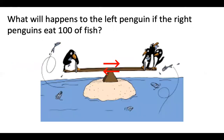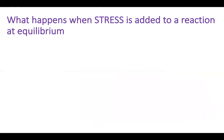So a quick question for you. What will happen to the left penguin over here if the right penguins eat a hundred of the fish? Yeah, there's going to be stress. There's going to be stress caused on this balance right here, on the fulcrum of the balance, because these penguins are going to be catching a whole lot more fish and adding a whole lot more weight to the reaction. We're going to start to see one side of this reaction begin to outweigh the other side and we're no longer going to have the equilibrium we're looking for.